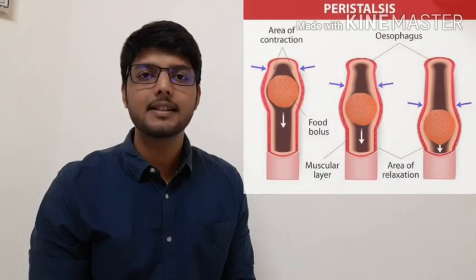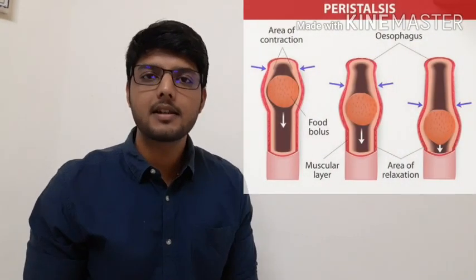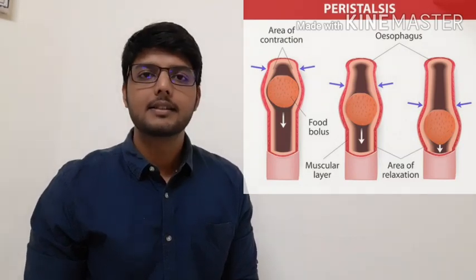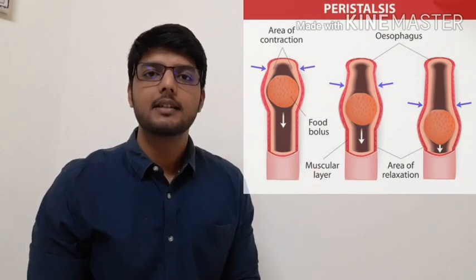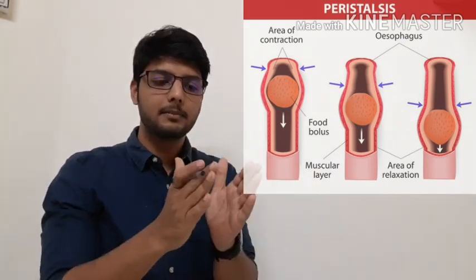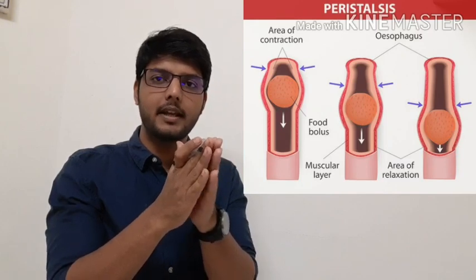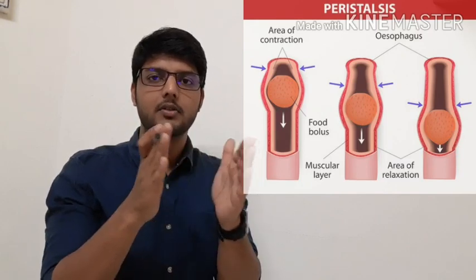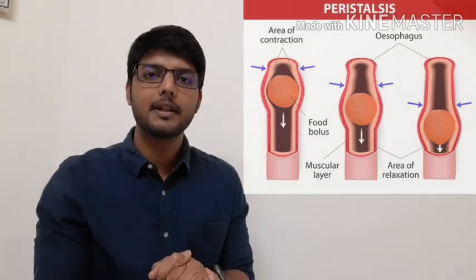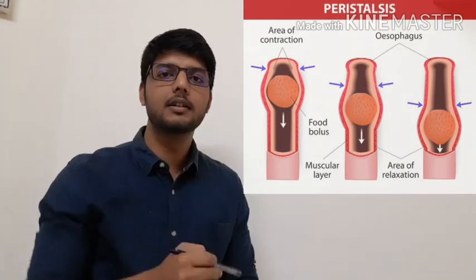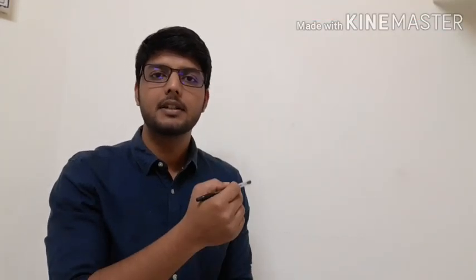An important question arises: how does food move forward in the alimentary canal? The answer is by the peristalsis process. In peristalsis, a wave-like movement is created in the alimentary canal muscles — the muscles contract and relax, contract and relax. By this, the food gets a push in a forward direction, and in this way food is passed to the other parts of the alimentary canal.